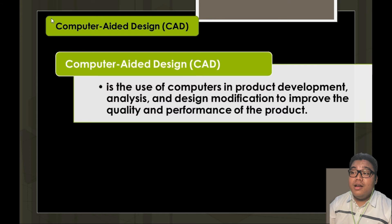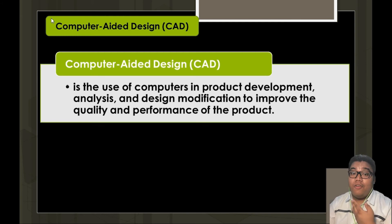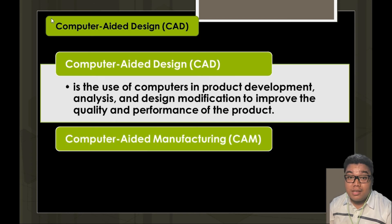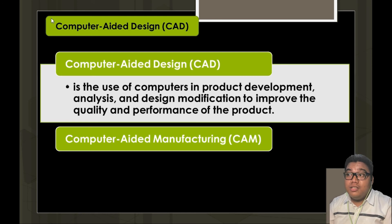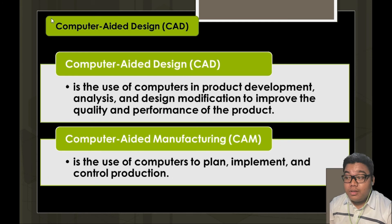Next is computer-aided design, which is the use of computers in product development, analysis, and design modification. Nowadays it is vital to be knowledgeable in the use of computers for designing and for the manufacturing phase of the business, because technologies are present that allow businesses to manage and oversee their operations seamlessly. Computer-aided manufacturing is the use of computers to plan, implement, and control production.